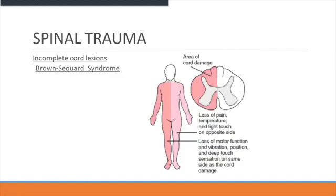In the illustration of Brown-Séquard syndrome, with injury to one side of the cord, you can see loss of pain, temperature, and light touch on the opposite side, while on the side that is affected there is loss of motor function, vibration, position sense, and deep touch sensation on the same side as the cord damage.